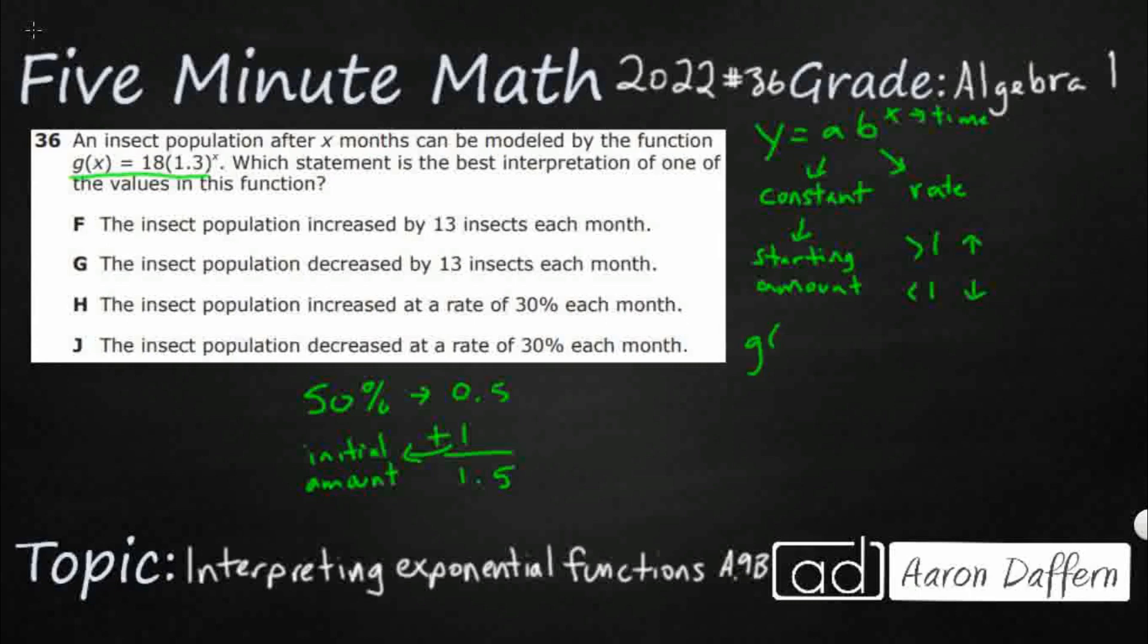And so let's see what we have here. We've got g of x equals 18 times 1.3 to the x. Okay, so this 18 is going to be your starting population. Dealing with insects here, so there were 18 insects.